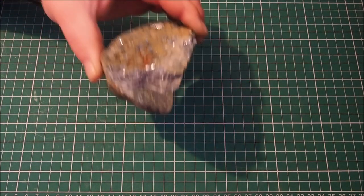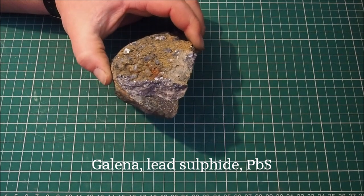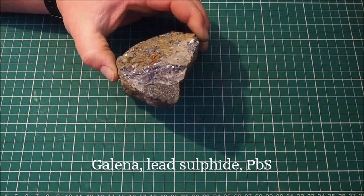Starting with our lead ore then, so this is galena, this is the most common ore of lead in the world. This is lead sulphide, chemical formula PBS.